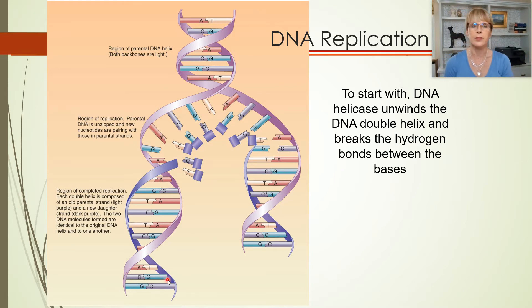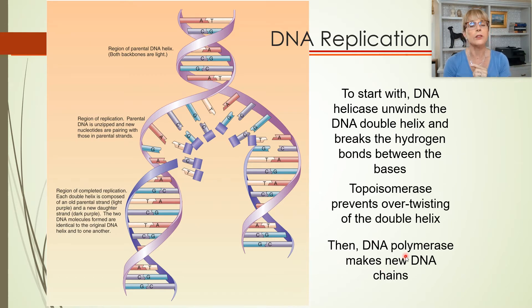So DNA helicase unwinds the DNA double helix, then topoisomerase is holding the strand open. Then there is an enzyme called DNA polymerase that is going to walk down each strand and everywhere there's a G on the left strand and it's building the right strand, it is going to put a C. And in that way, it is going to end up making a perfect copy of the right strand.